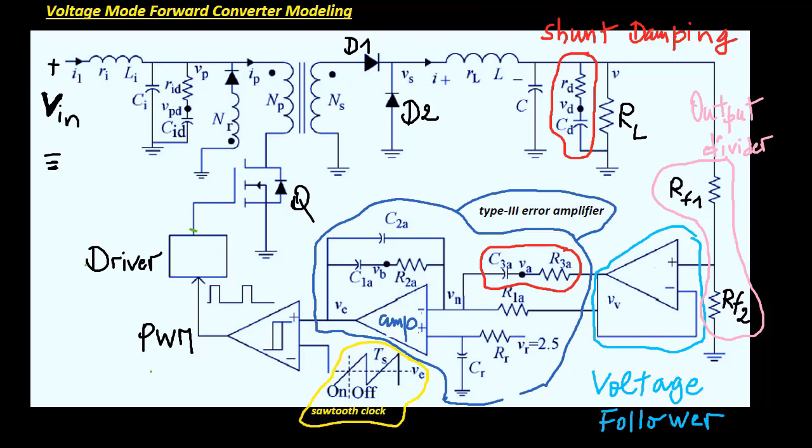The sawtooth clock is shown externally. In actual implementation, it is generally an internal block of an integrated PWM chip.